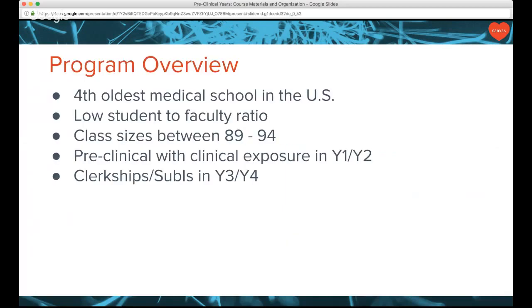In terms of our program, we're the fourth oldest medical school in the US and we are very small — our cohorts are only between 89 and 94, though this year we had 98. We're in a very small rural area, which makes it a little difficult to place students during the clinical years, which is why we try to keep our numbers down. We have a four-year program where the first two years are the preclinical exposure with a longitudinal preceptor experience, and the last two years are the clerkships and sub-Is.